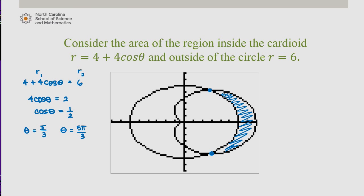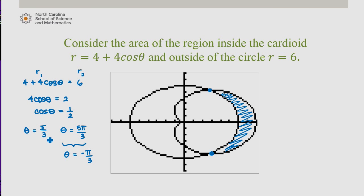While we may want to use pi over 3 and 5 pi over 3 as our limits of integration, we recognize that the direction these curves are graphed as theta increases means those intersection points don't align with that. We can rewrite 5 pi over 3 as negative pi over 3. Sweeping theta between negative pi over 3 and pi over 3 aligns with how the two curves are graphed, whereas integrating from pi over 3 to 5 pi over 3 would look at areas in the wrong direction. So our limits of integration are negative pi over 3 to pi over 3.